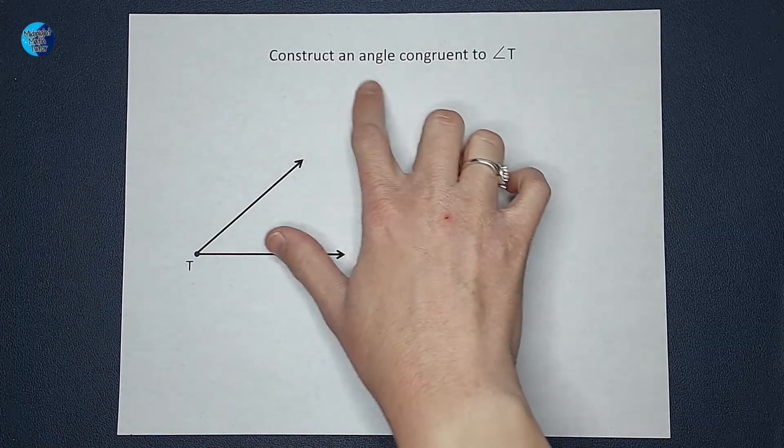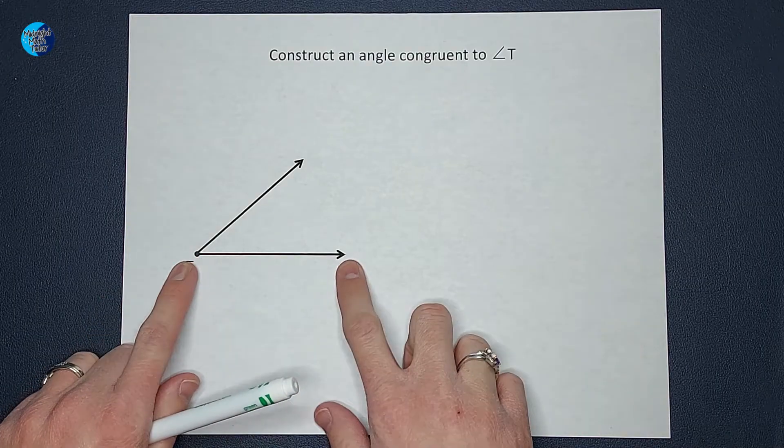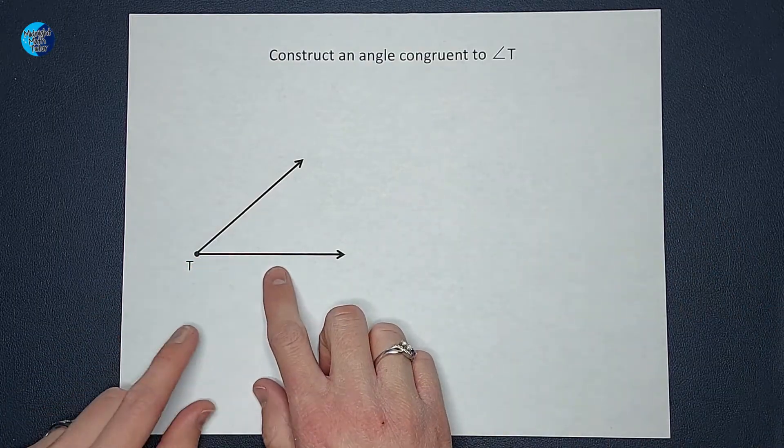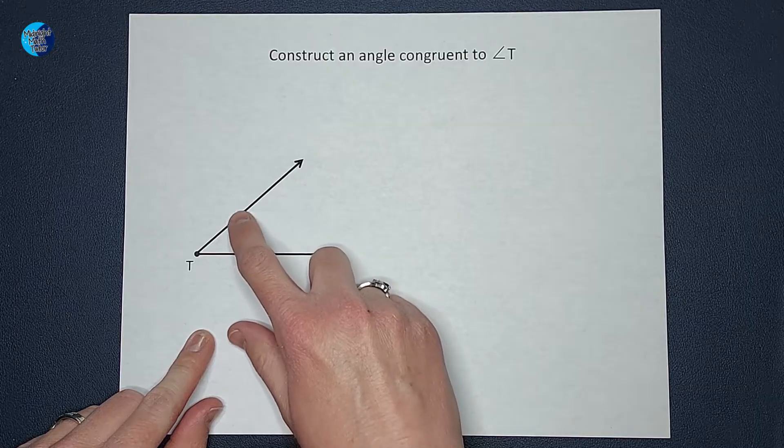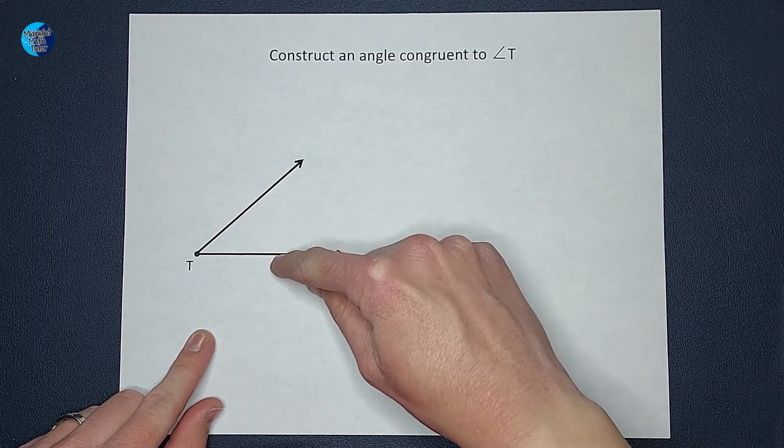Now we are constructing an angle that is congruent, which means my rays don't have to be the exact same length as this guy here. What we care about is the angle, the degrees here, right?